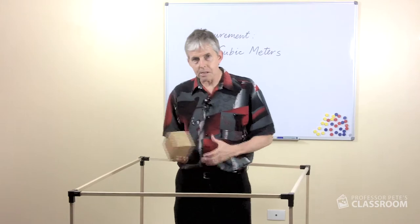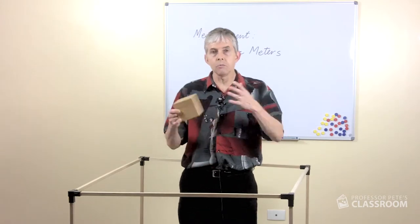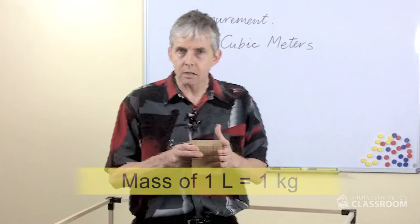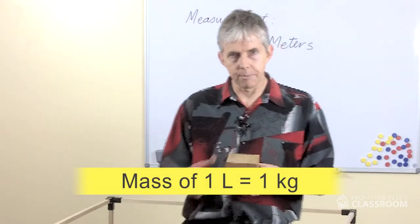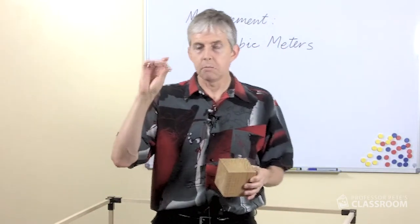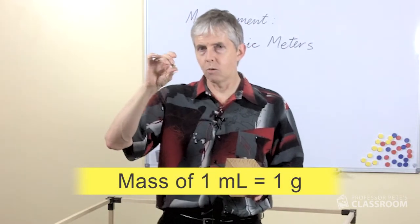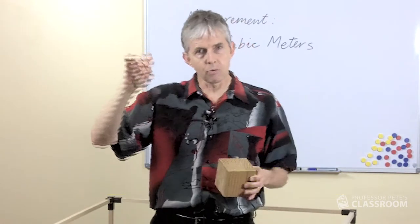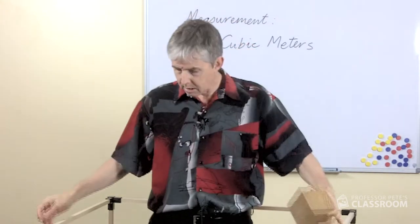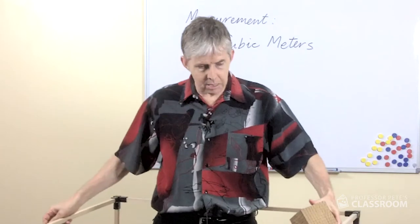One more thing we can do here is to connect this with mass. Again in the metric system there's this nice connection between volume and mass. One liter of water weighs one kilogram. One milliliter of water weighs one gram. So here we would, if we could make this out of water in some way, this would be a gram of water, this would be a kilogram of water. What would the mass of this amount of water be?